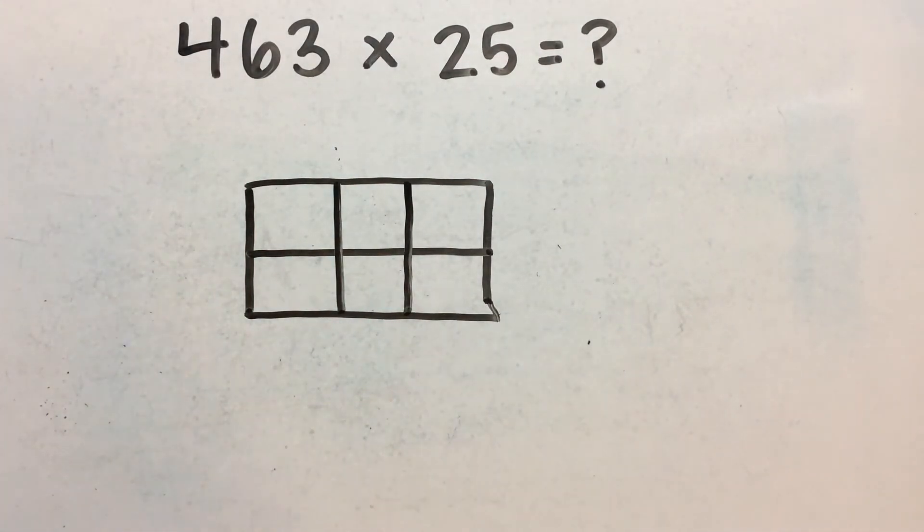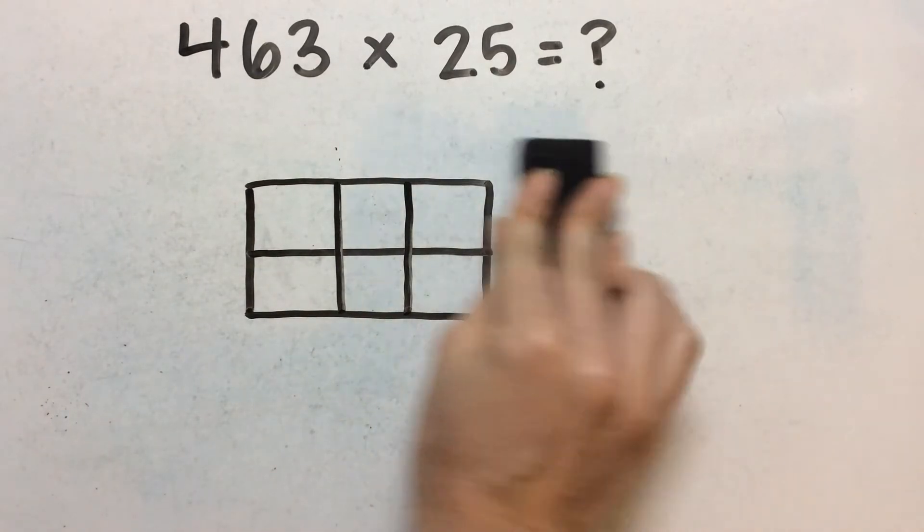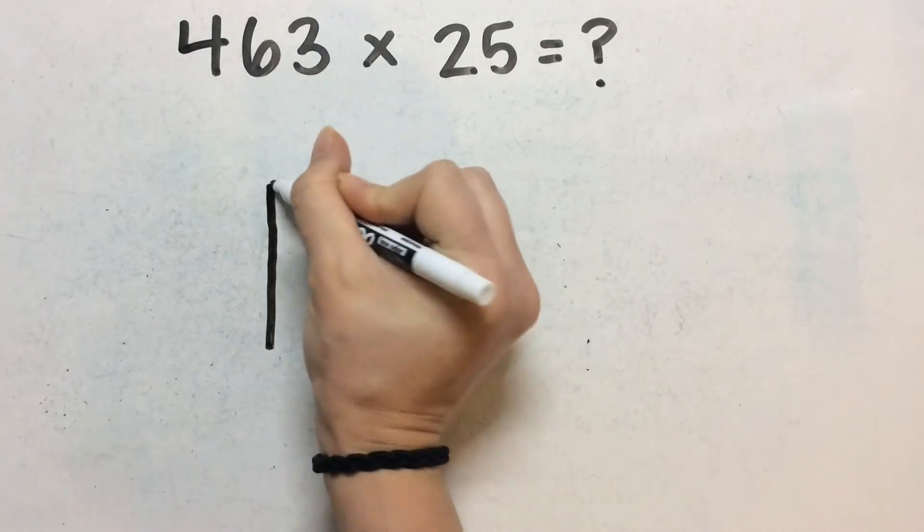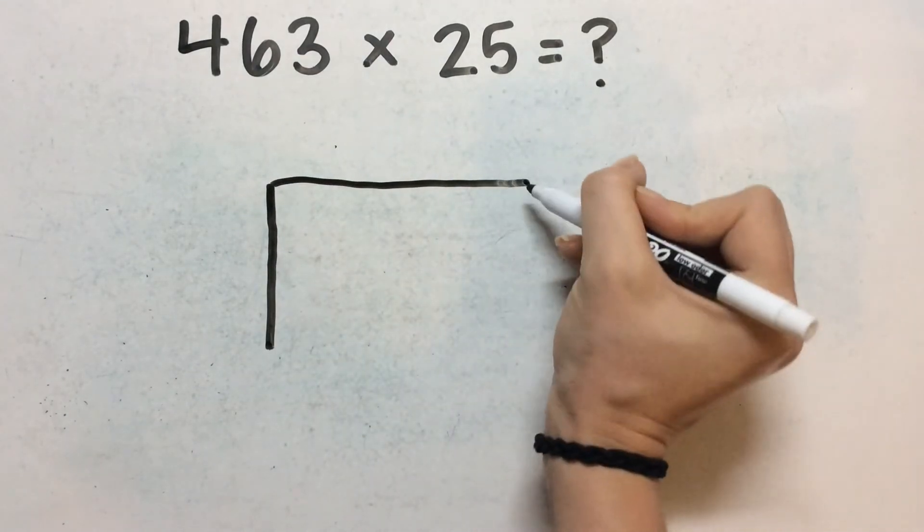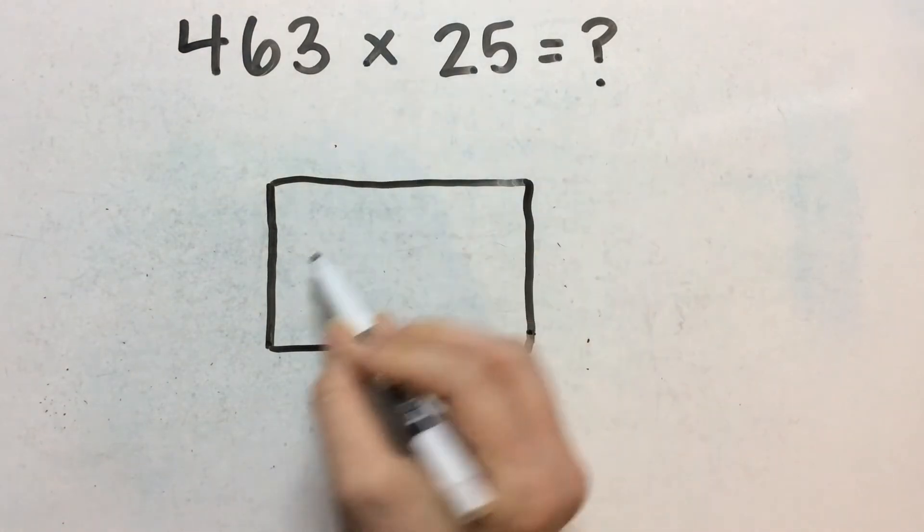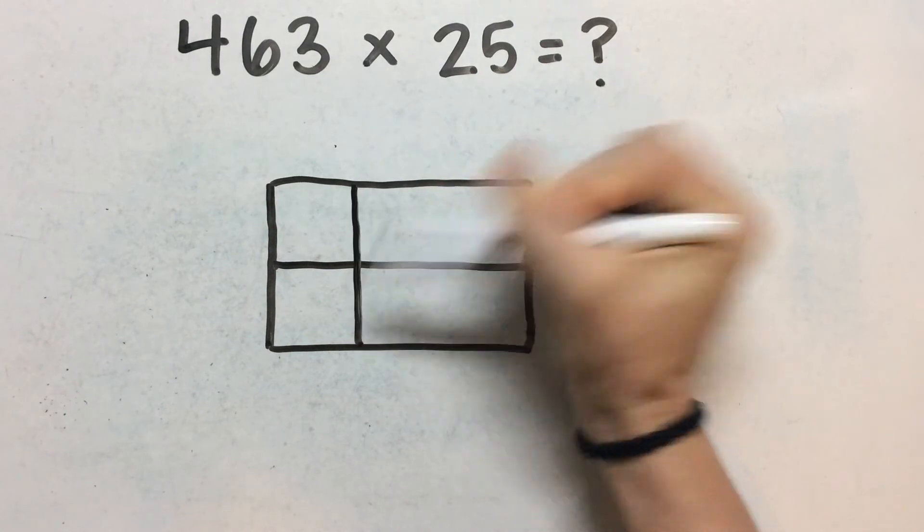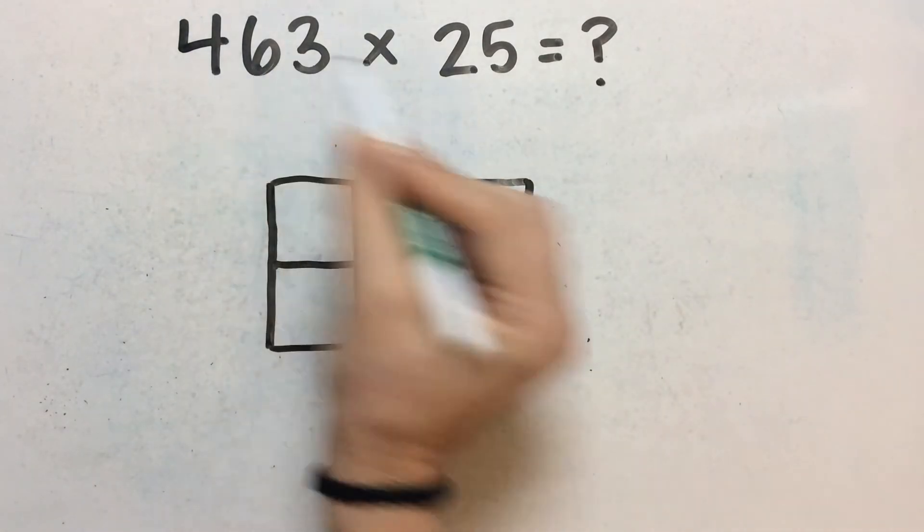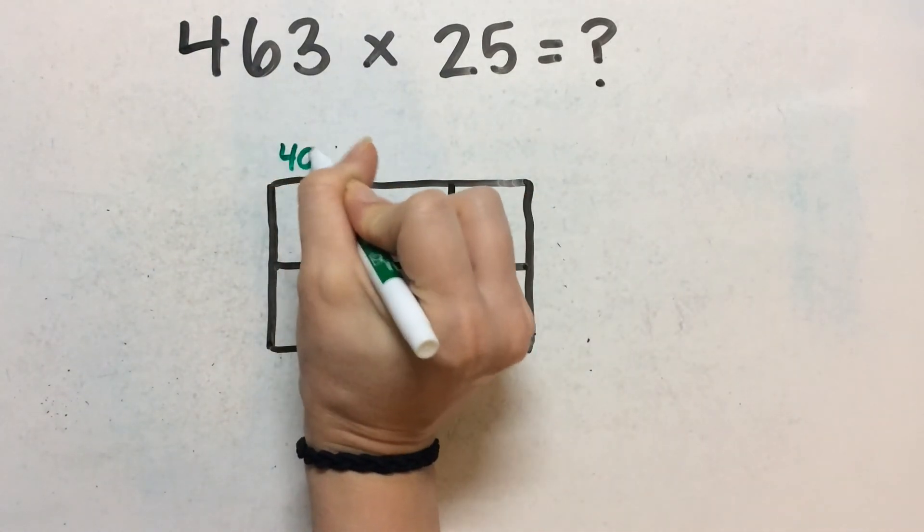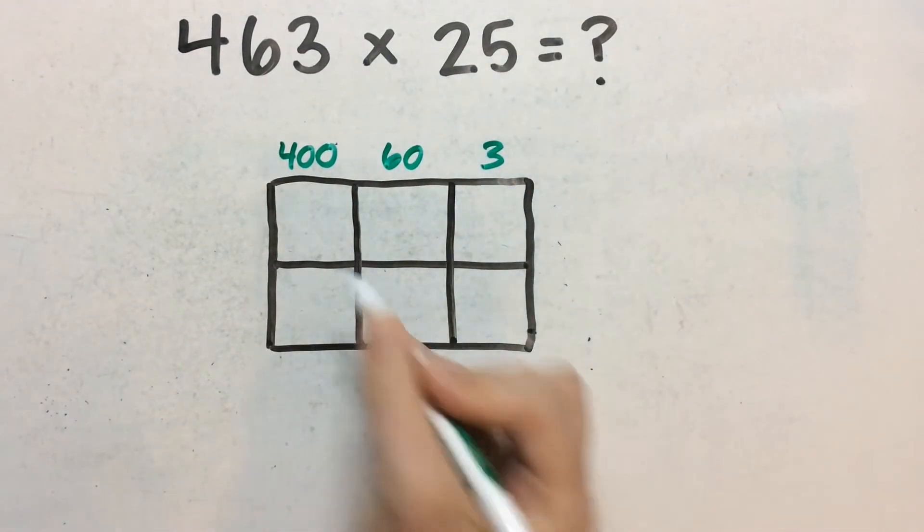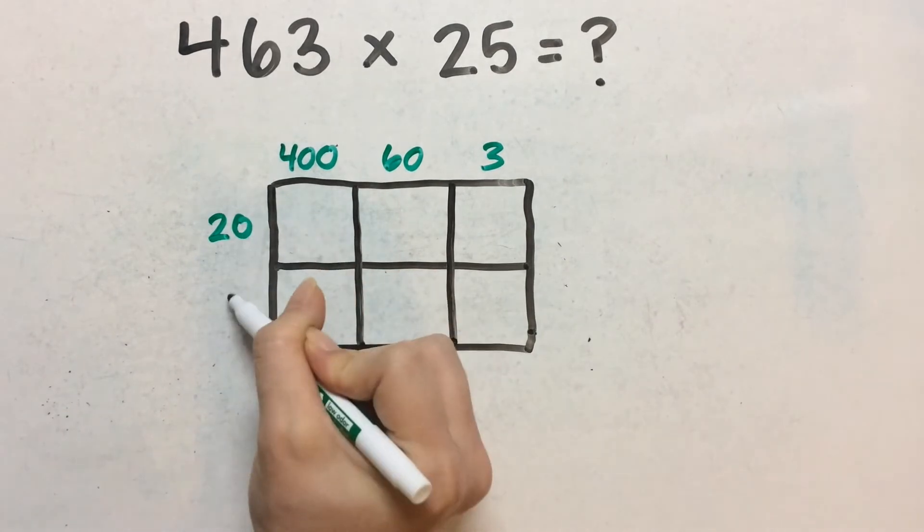I might actually make this a little bit bigger, so I have room to write in my answers. So you want to make your area model kind of big, so you have space to write your answers. So cut it half this way and three squares this way. So then we take apart these numbers. So 463, this is 400, this one is 60, and this one is three. And then 25 is 20 and five.